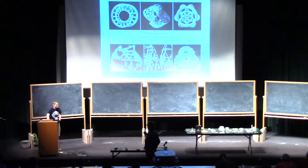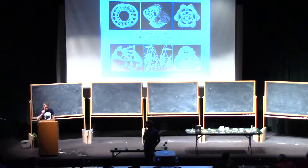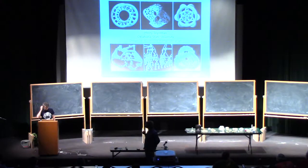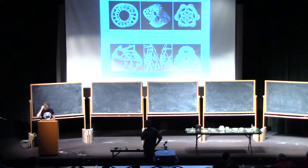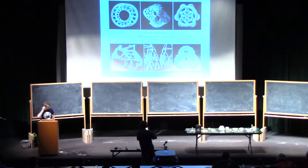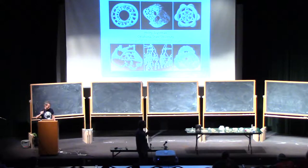Henry Segerman is a geometric topologist who is a professor at Oklahoma State, and he's become one of the great proponents of mathematical art, and he has a book to prove it — came out this year, 'Visualizing Mathematics with 3D Printing.'